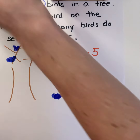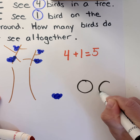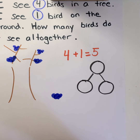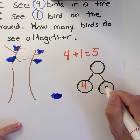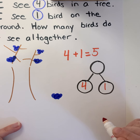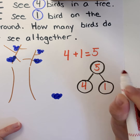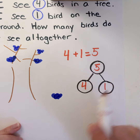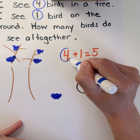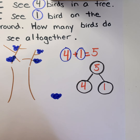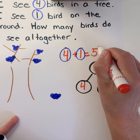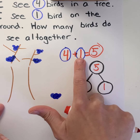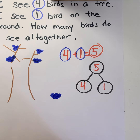If I wanted to, I could draw a number bond to help me also. Here are our two parts: four are in the tree, one is on the ground, and how many are all together? Five. These are our two parts, and we can put them together to make our whole or our total. These are those two parts that we used with our two blue circles, and when we put them together we put them into the red circle. You might see it look a little bit like this — those are our two parts and this is our total.